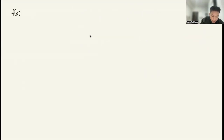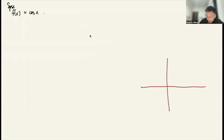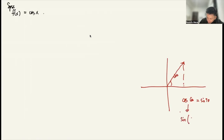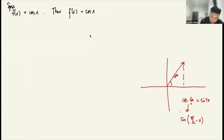Now suppose f(x) = cosine x. We can verify using a co-function identity: cosine of 60° equals sine of 30°. In general, cosine x equals sine of (π/2 − x). So f(x) = cosine x is the same as sine of (π/2 − x).